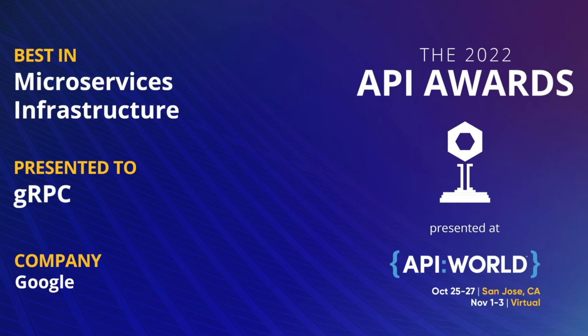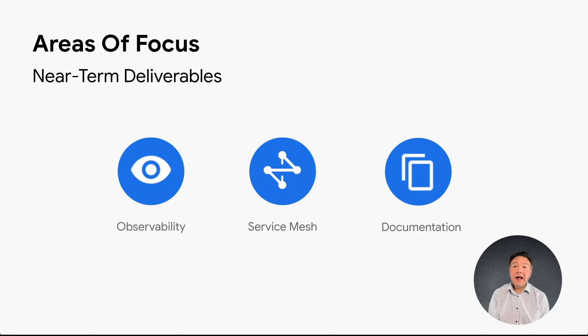Microservices with gRPC is a very popular use case and an important area of focus for the gRPC team. We were honored when gRPC recently received the Best in Microservices Infrastructure Award at API World. A common question we receive is: what are some of the items actively being pursued to improve gRPC? The following are three areas of focus for the Google gRPC maintainers.